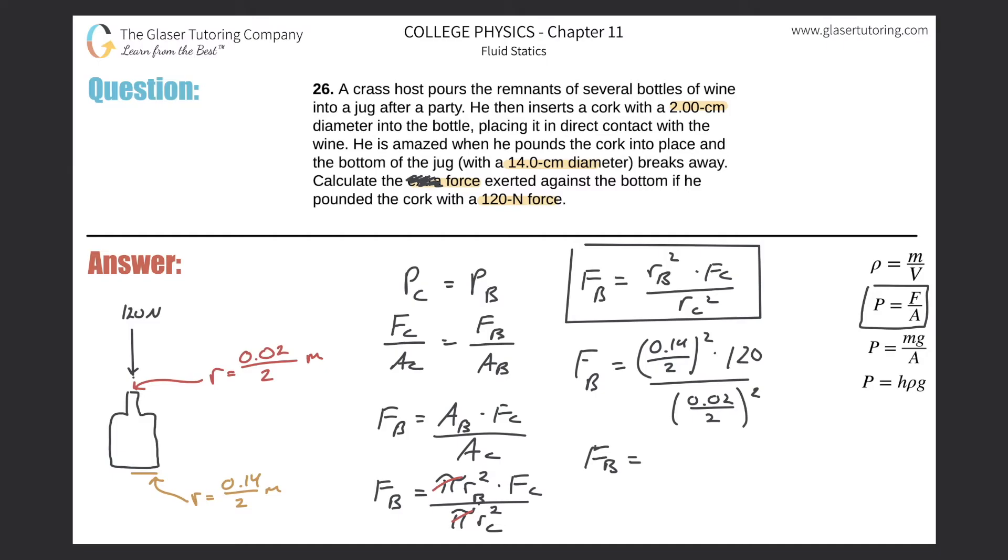Let's plug it into the calculator: 0.14 divided by 2 squared, then multiply that by 120, and divide by 0.02 divided by 2 and square that. We get a value of 5,880 newtons.